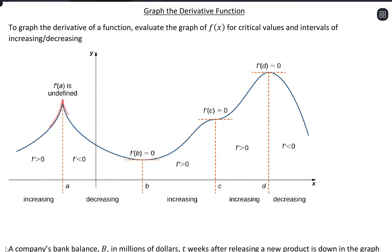So it can be making this sharp corner and kind of changing trend there. And then we have these other cases with minimums, maximums, or flat values where our derivative is equal to zero — so those are also critical values. When we're grabbing those critical values, we're looking for where the derivative is equal to zero, but also where that derivative function is undefined. Then once we have those critical values, we can evaluate them in terms of increasing, decreasing, concave up, concave down to get an idea of the trends at those spots.